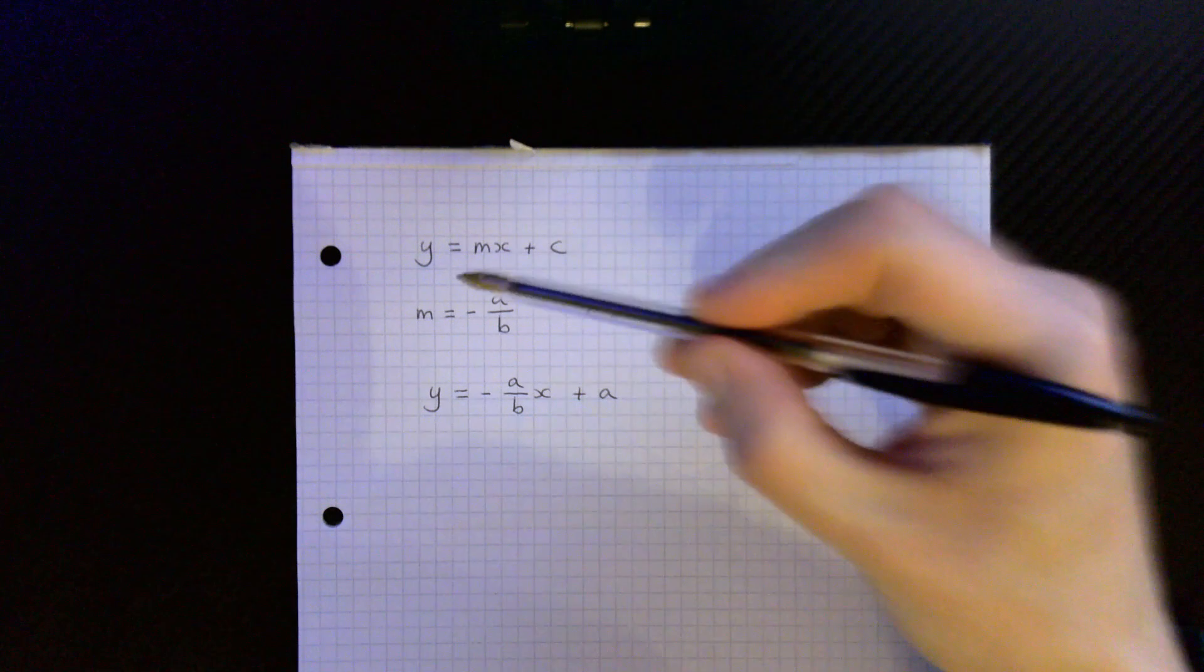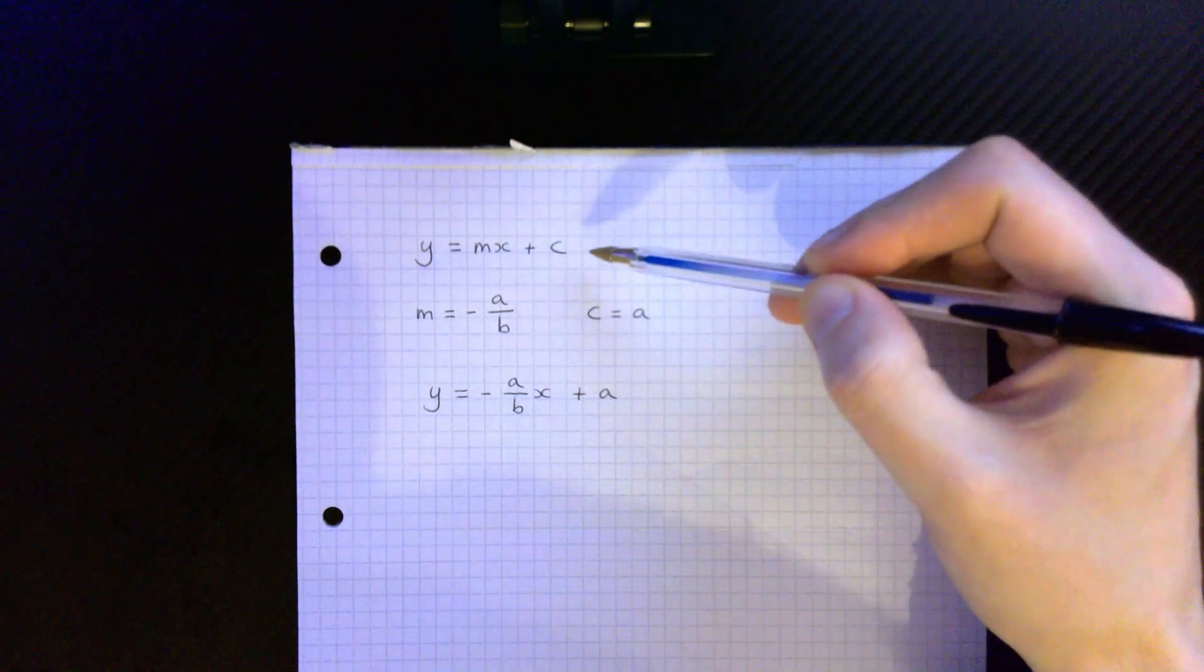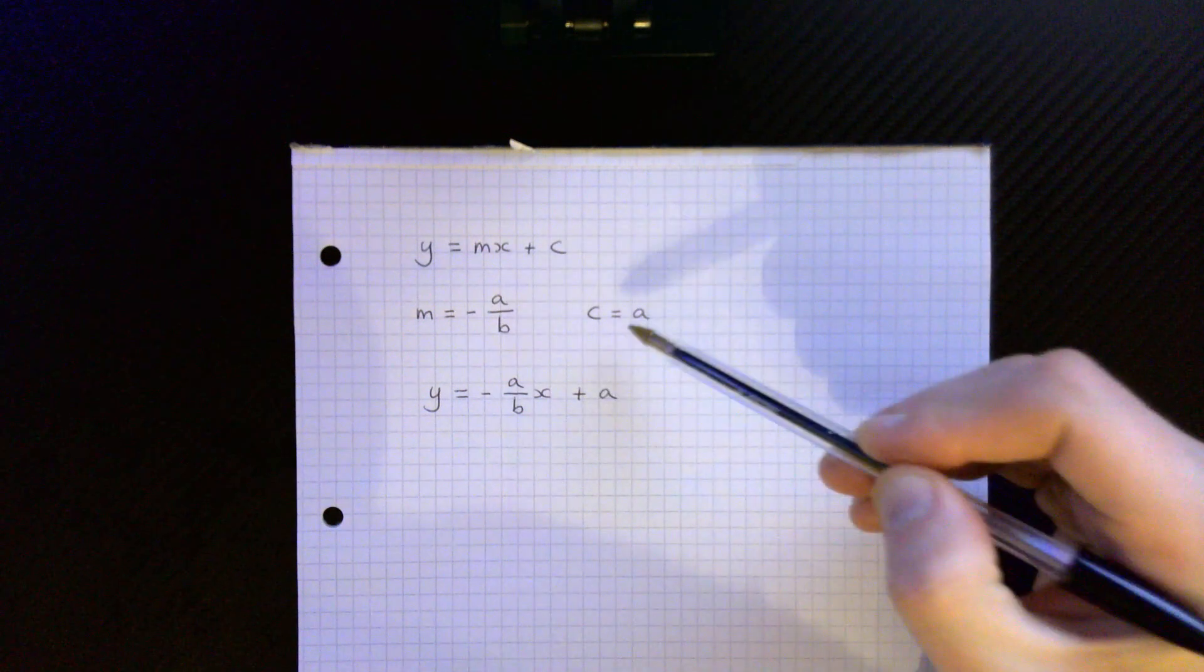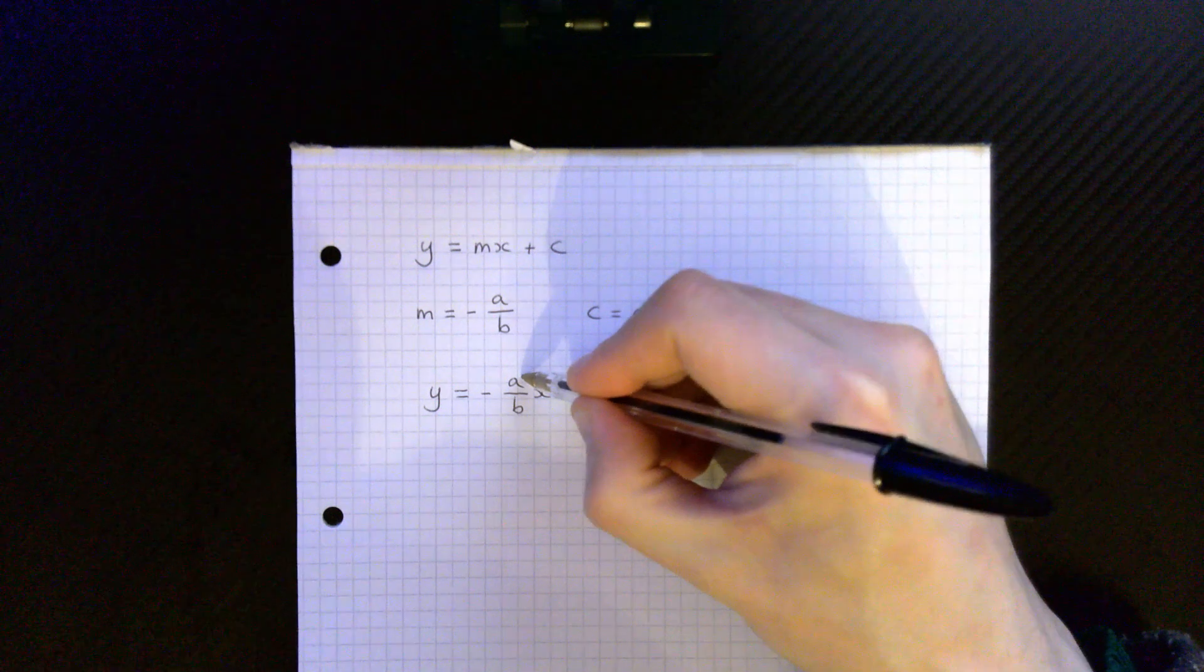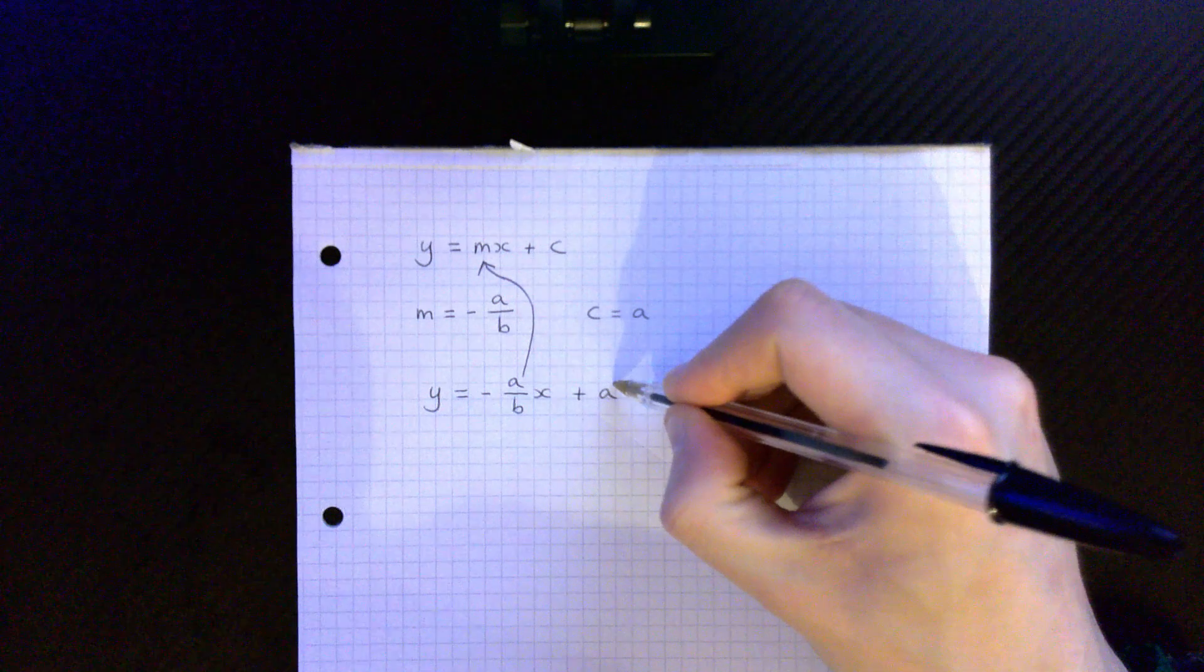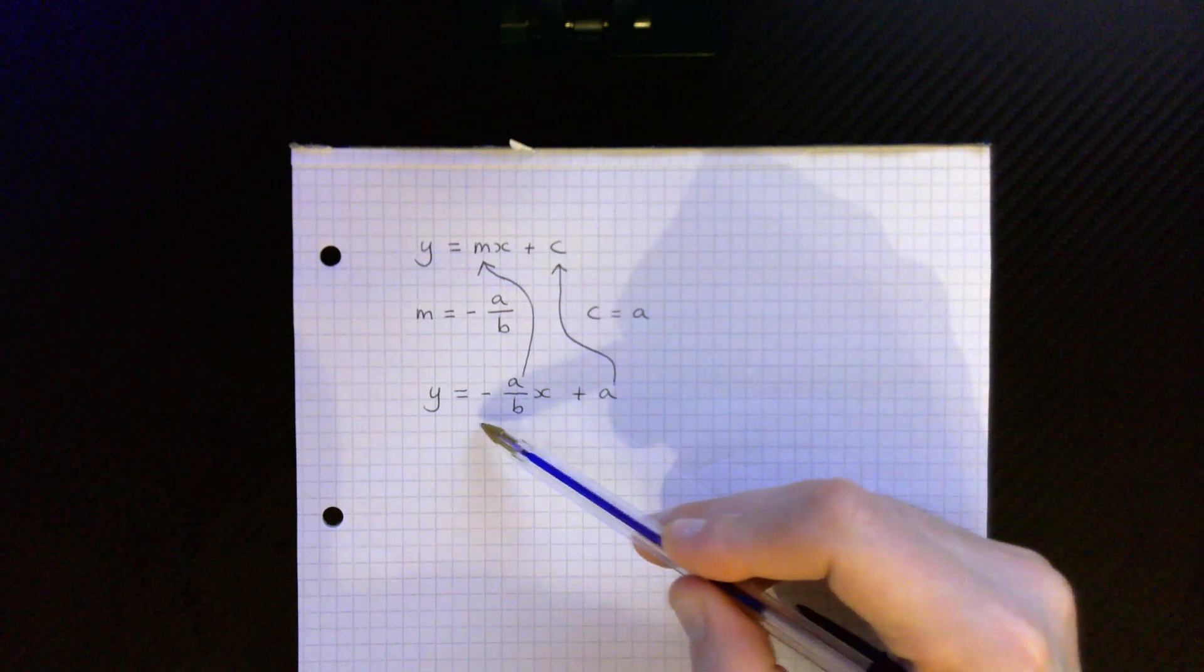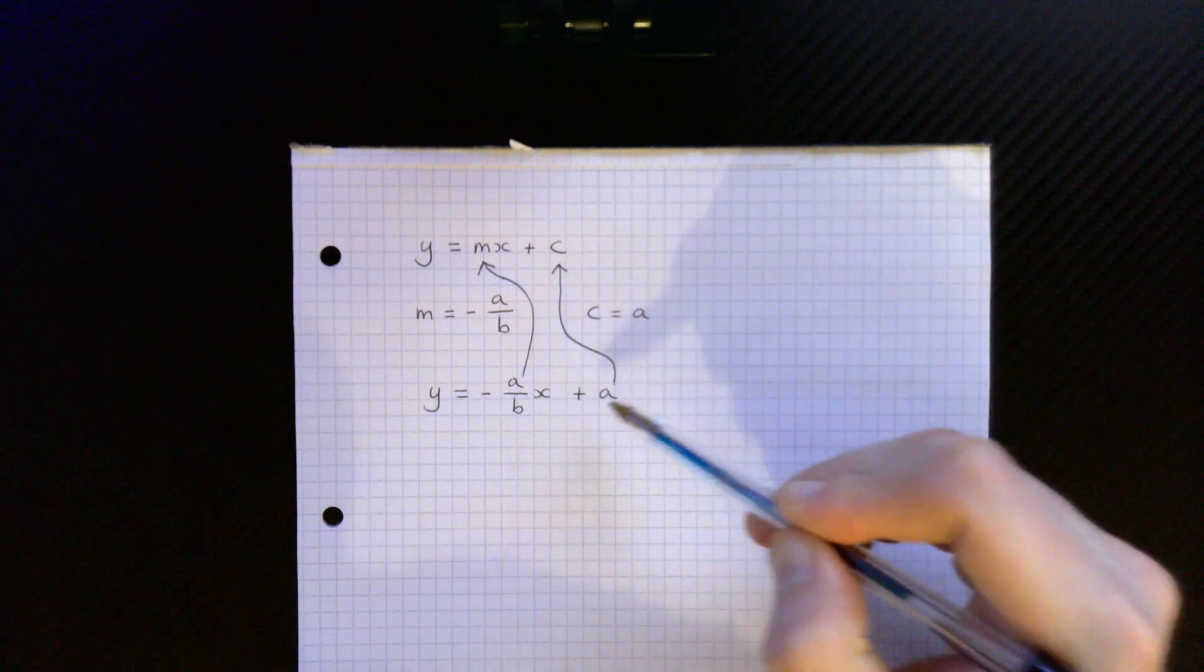Okay so our line is described by y equals mx plus c. That is the slope intercept form. We've discovered that m is minus a over b and c is equal to a. So we plug this value over here into m and we plug the value a into c. And from here we get this equation over here. Y is equal to minus a over b times x plus a.